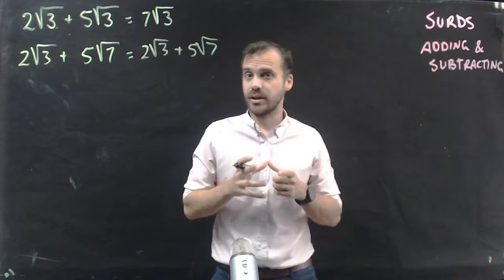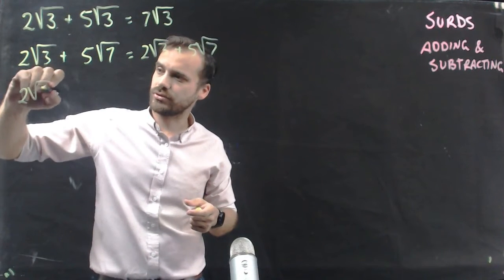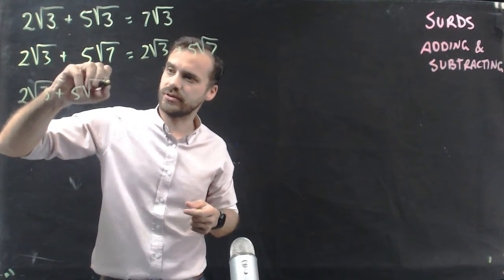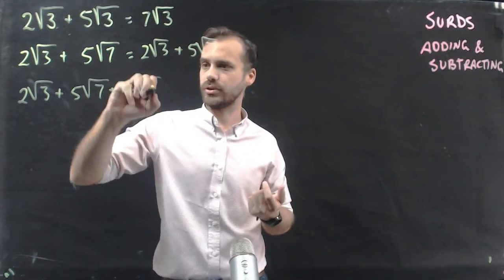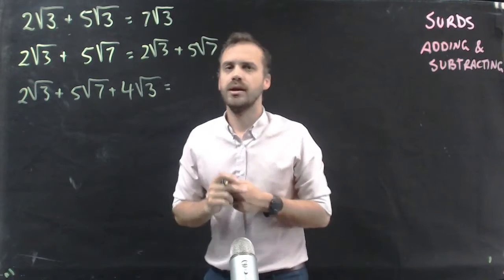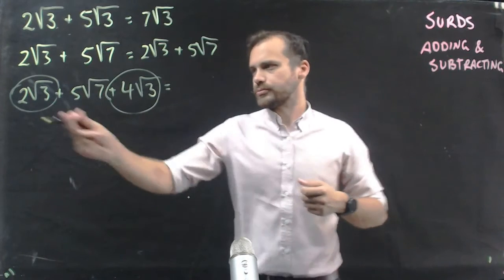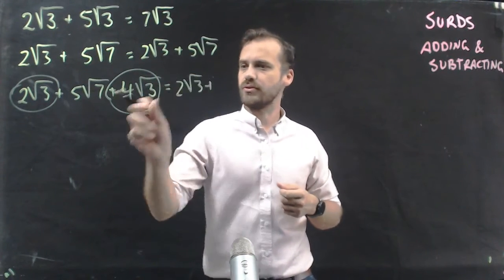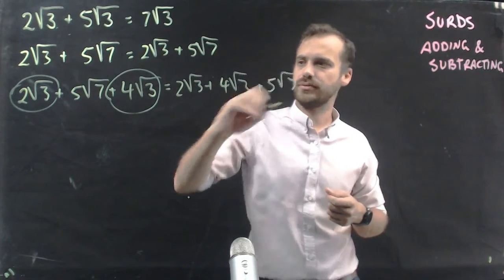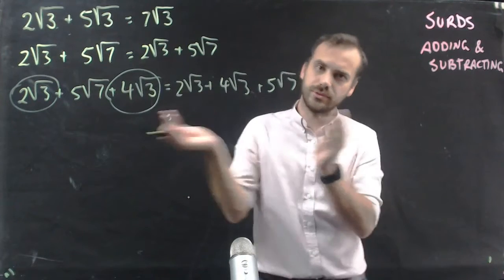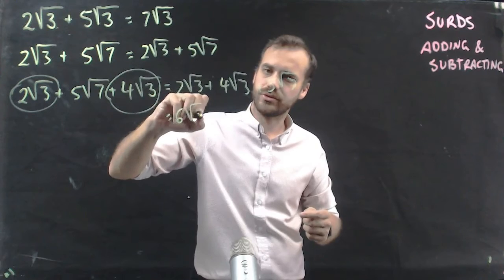I can, however, group like terms. So if I see something like 2 root 3 plus 5 root 7 plus 4 root 3, I identify the root 3 terms and group them: 2 root 3 plus 4 root 3, plus 5 root 7. They group together, so 2 root 3 plus 4 root 3 is 6 root 3, plus 5 root 7.